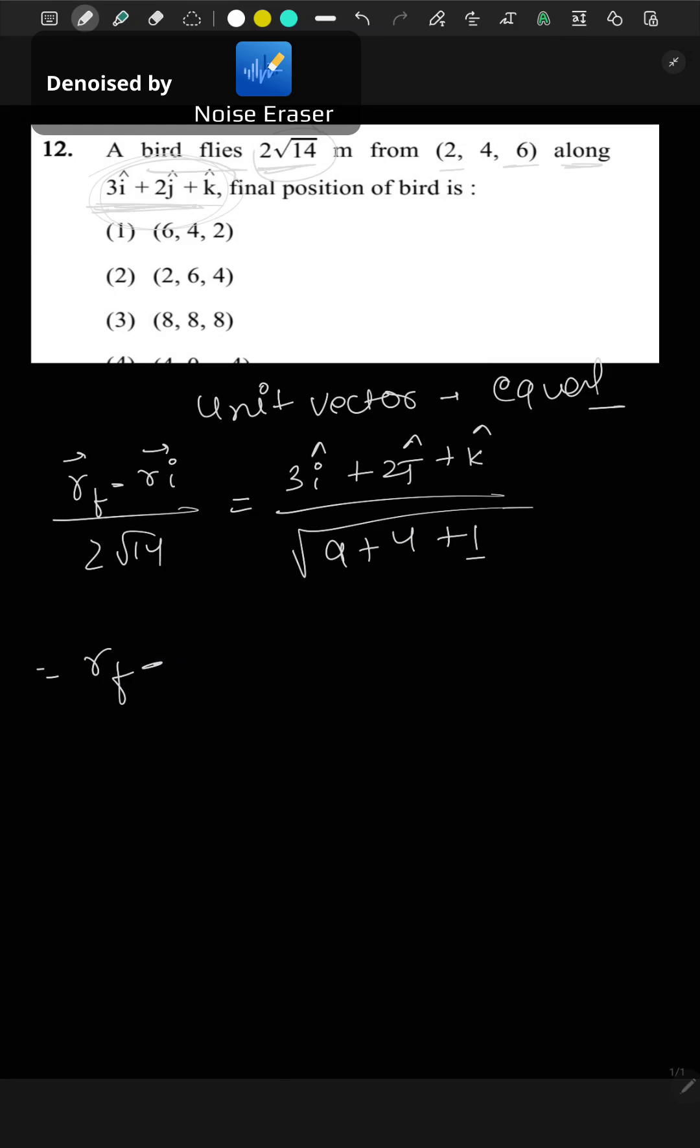Now our final minus our initial is given here: 2i cap plus 4j cap plus 6k cap upon 2 root 14, which equals 3i cap plus 2j cap plus k cap under root 14. So this will be Rf minus 2i cap plus 4j cap plus 6k cap.